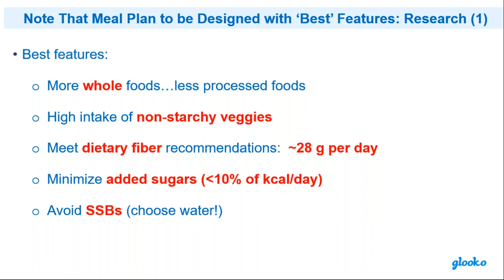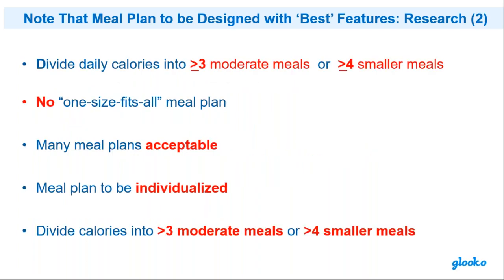Avoid sugar-sweetened beverages and flavored waters, which can be all sugar — more water would be a good deal. Dividing calories into three moderate meals or four smaller meals really does help glycemia. Saving all the calories and carbs for one giant main meal actually hurts glycemia. The more we can divide up the meals, the better the glycemic ranges. Many meal plans are acceptable — there's no one-size-fits-all — but we want to make note of those best features with individualization.